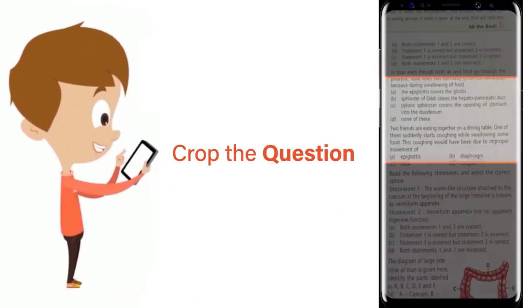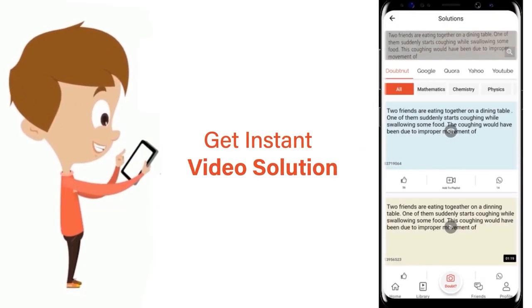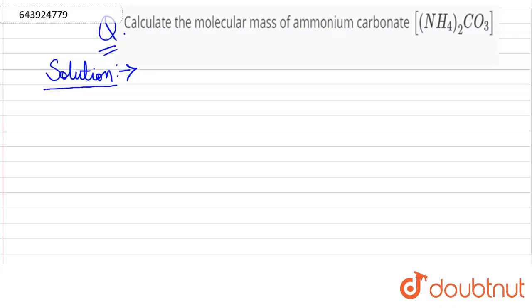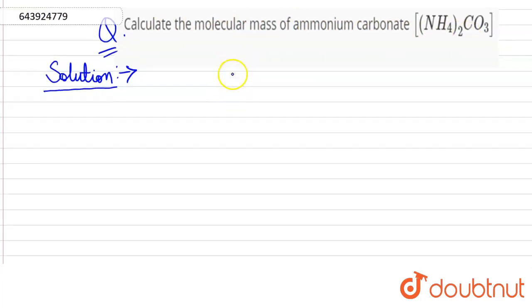Just click the image of the question, crop the question, and get instant video solution. Download Doubtnet app today. Calculate the molecular mass of ammonium carbonate (NH4)2CO3.